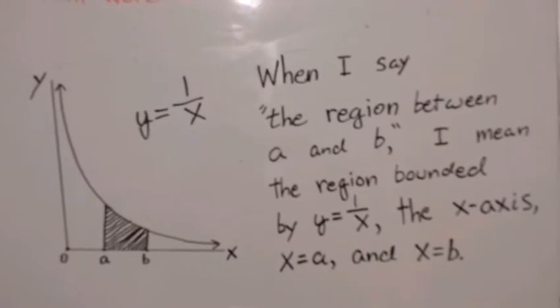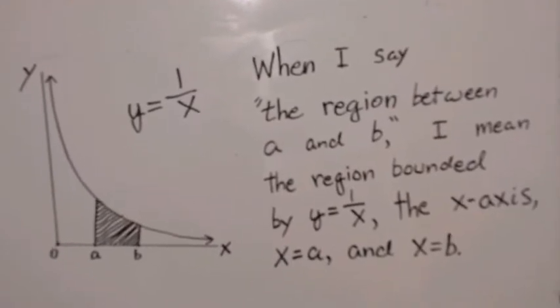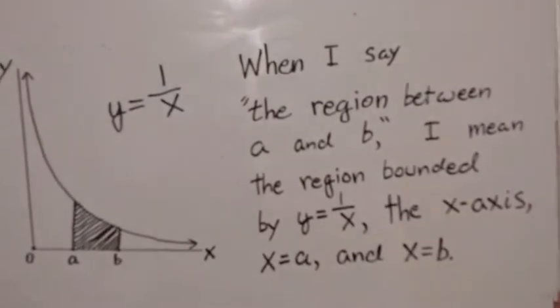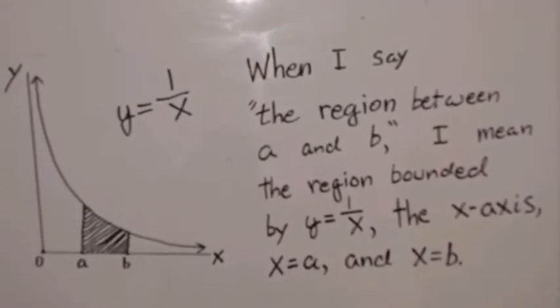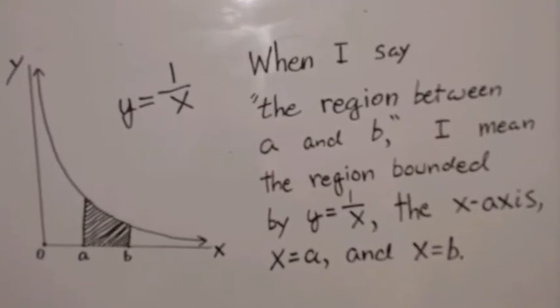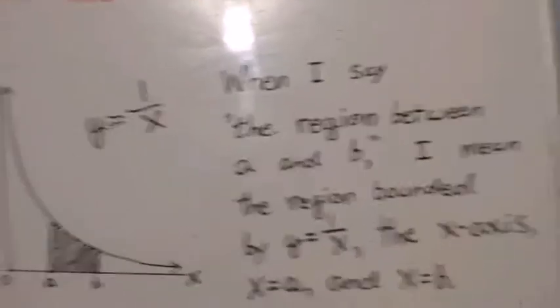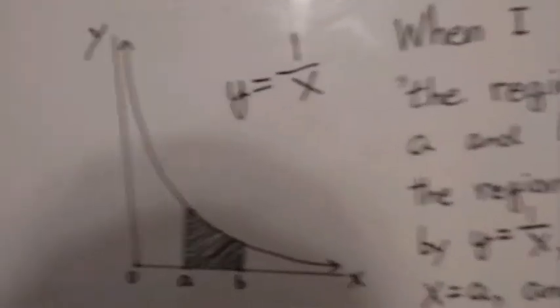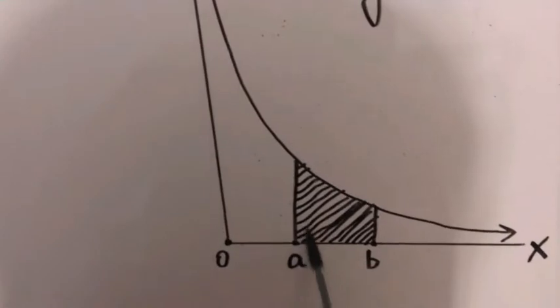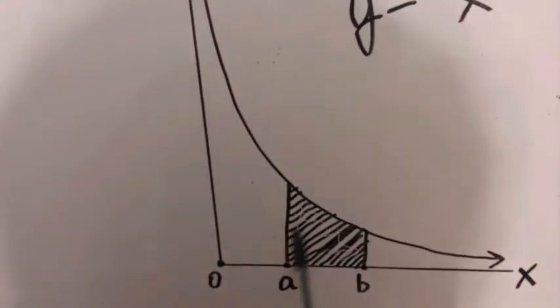Before we begin, however, I do need to make a clarification. When I say the region between a and b, in this context I mean the region bounded by y equals 1 over x, the x-axis, x equals a, and x equals b. So, the region between a and b in this context refers to this region here.